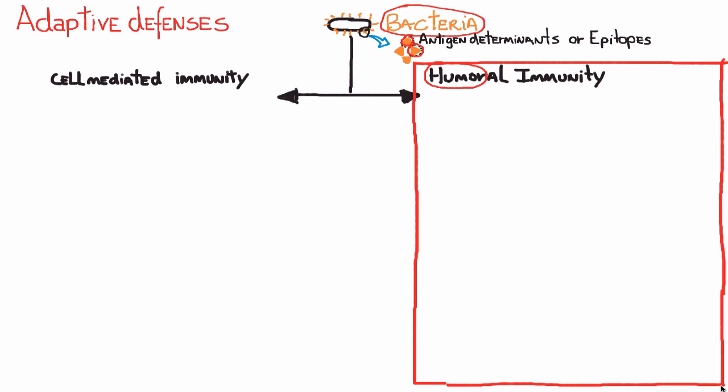Who is going to recognize these antigens, these flags? In humoral immunity, the cells that can recognize the enemy — the bacteria trying to invade your body — are the B cells. For example, if this bacteria were Streptococcus pneumoniae, the antigen determinants or epitopes would be M proteins. These M proteins bind to specific parts of the B cell. Each B cell has a membrane antibody that can bind to a specific epitope.